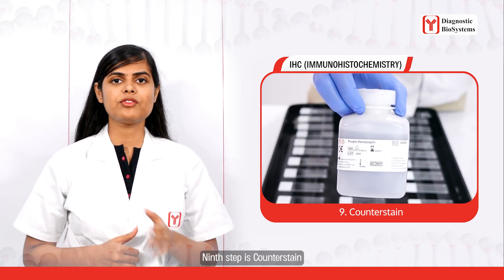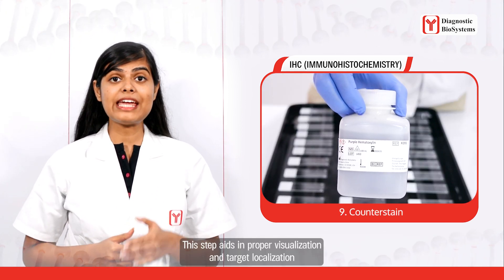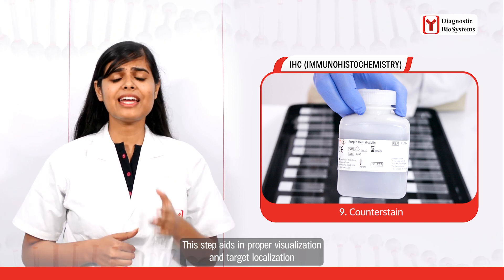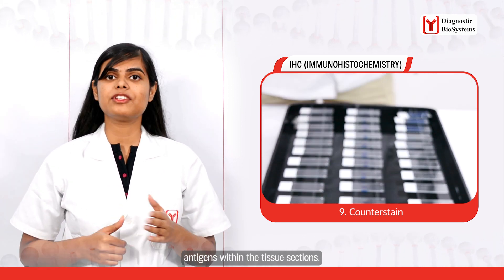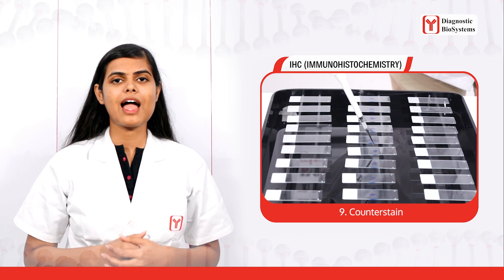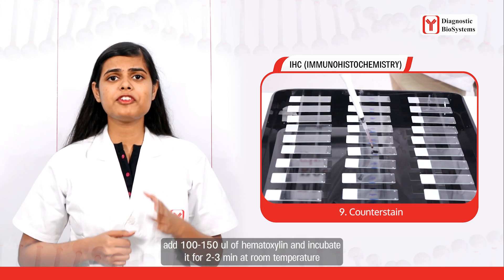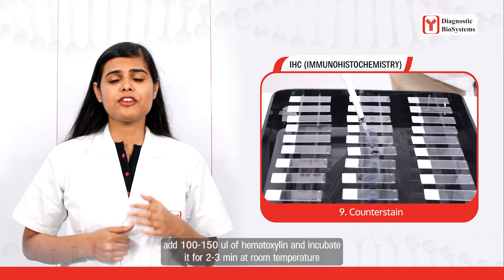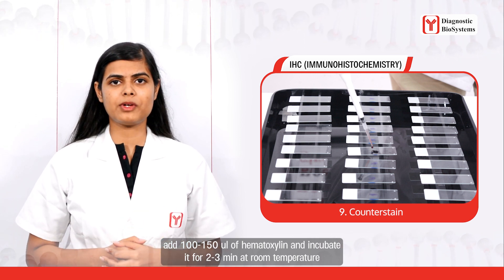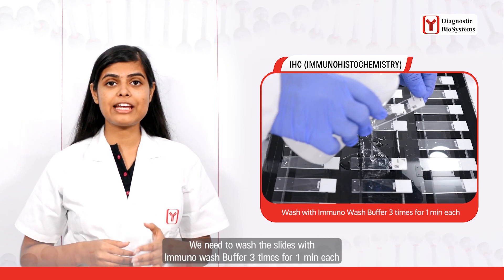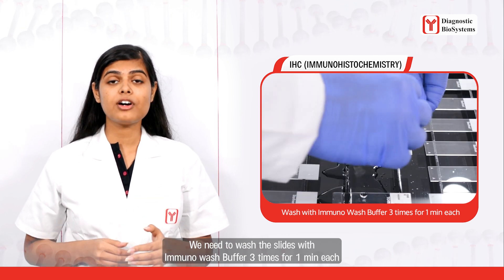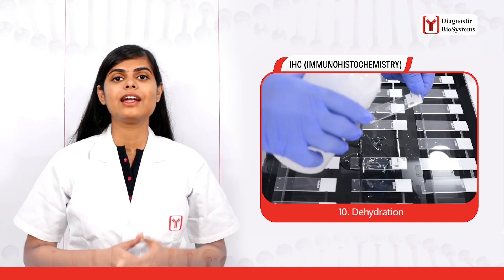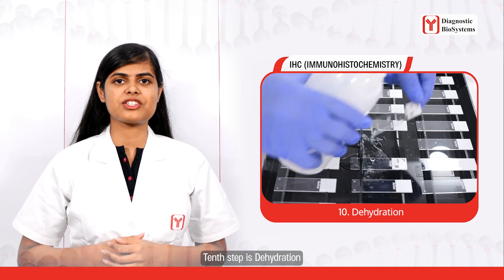The ninth step is counterstaining. This step aids in proper visualization and target localization of antigens within the tissue sections. Add 100 to 150 microliters of hematoxylin and incubate for two to three minutes at room temperature, then wash the slides with immunowash buffer three times, one minute each.